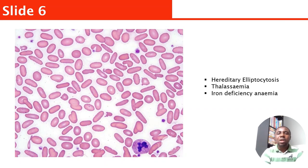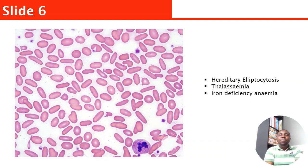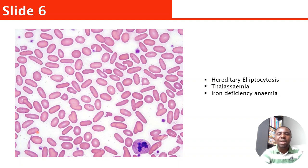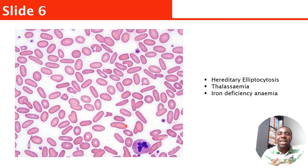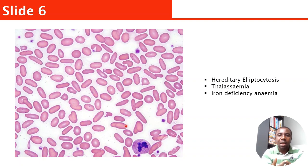This slide shows a lot of elliptocytes — those elongated, pencil-shaped cells. This is called hereditary elliptocytosis because there is a high number of them here. This can be commonly seen in thalassemia and iron deficiency anemia.